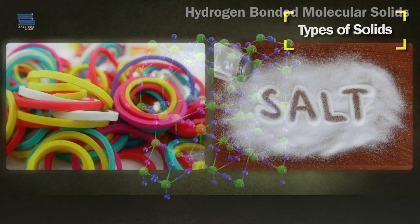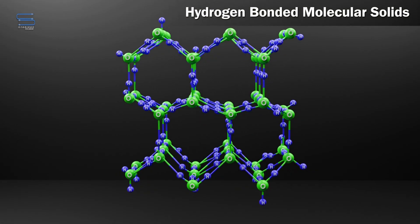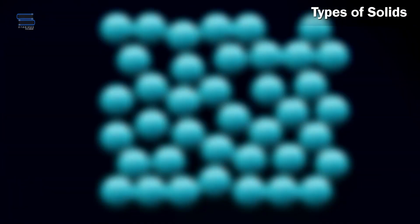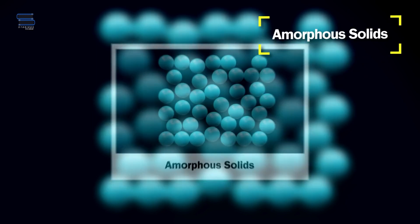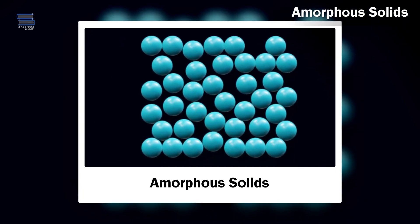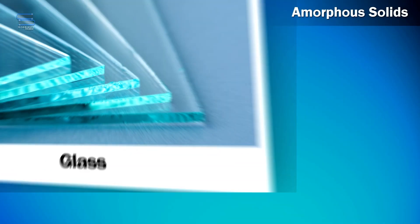First, let's discover amorphous solids. Unlike crystalline solids, amorphous solids lack a regular and repeating atomic arrangement. They exhibit a more disordered structure, resembling a jigsaw puzzle with no fixed pattern. Common examples include glass, plastic, and some types of rubber.